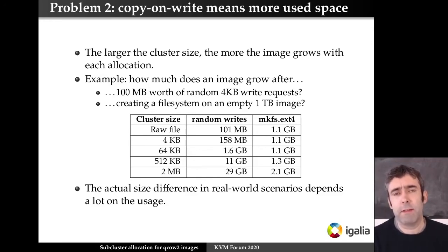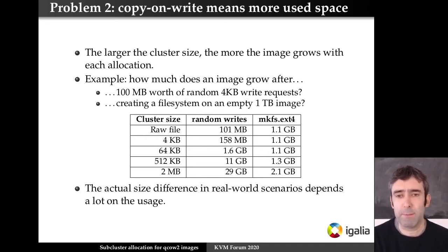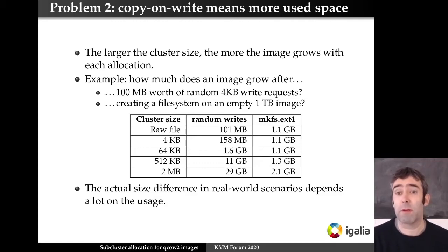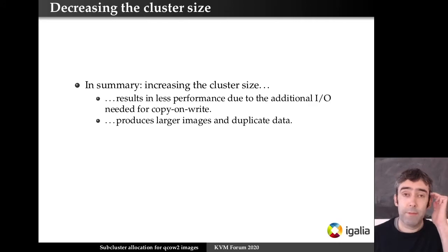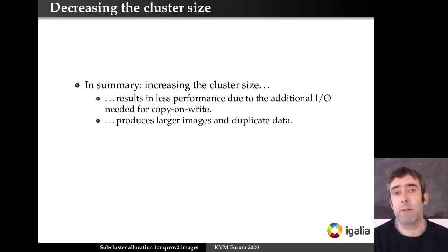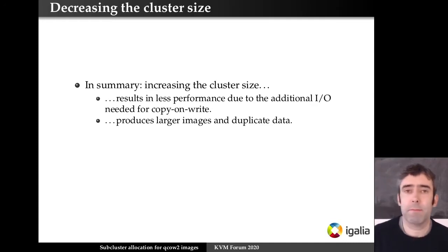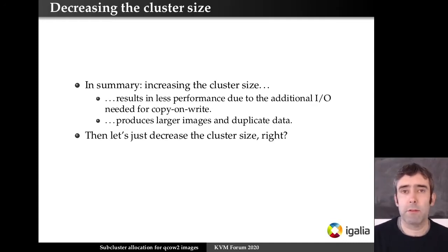In a second test, I took an empty 1 terabyte image, created a filesystem, and you can see the filesystem metadata uses 1.1 gigabytes. But if you increase the cluster size to the maximum, you use one more gigabyte just for creating an empty filesystem with nothing else in it. So in summary, if we increase the cluster size we get less performance due to additional I/O and we also get larger images with duplicated data.